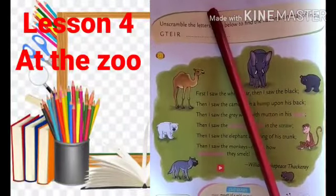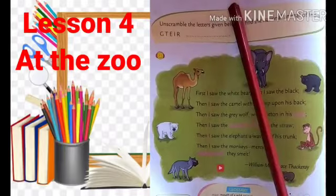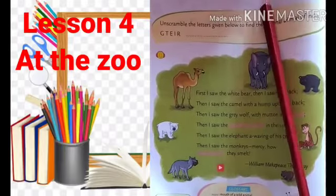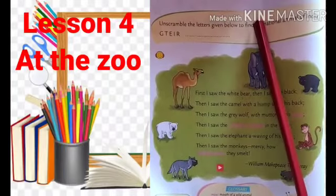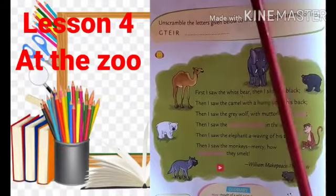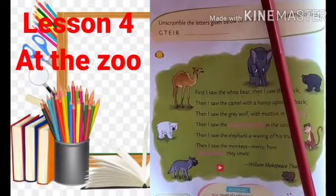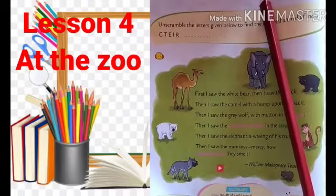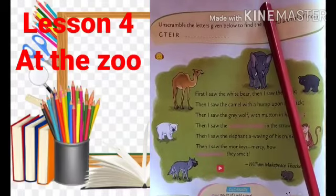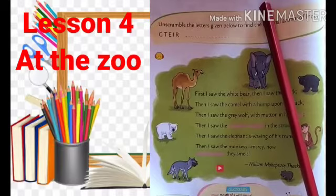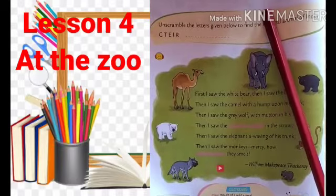Let's learn Chapter number 4, At the Zoo. What is the chapter number? Chapter number 4. What is the chapter name? At the Zoo. What is the meaning of zoo, or what will you see in the zoo? We will see different kinds of birds and animals in the zoo.